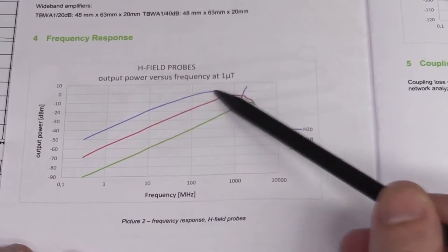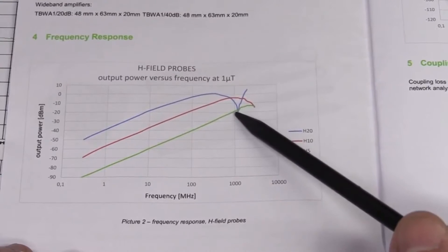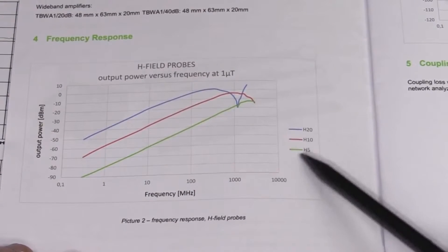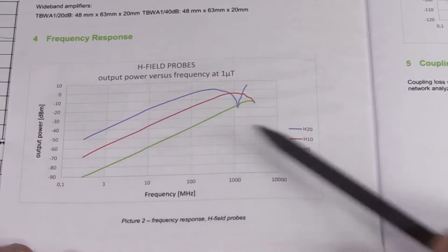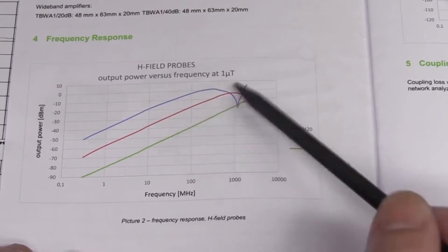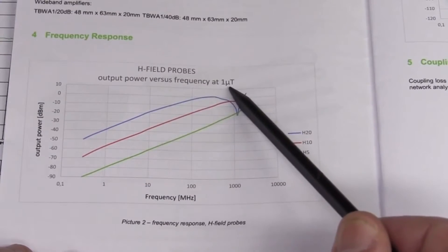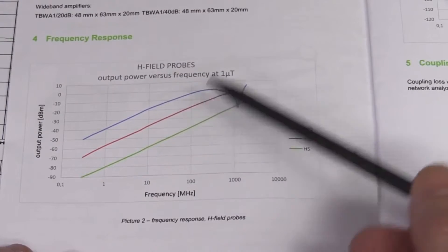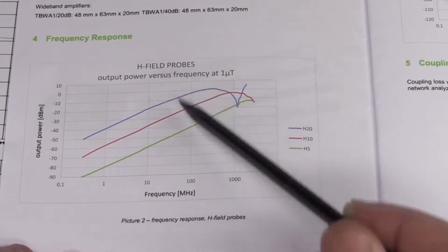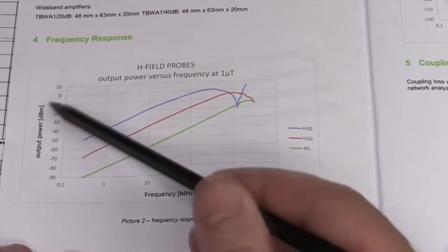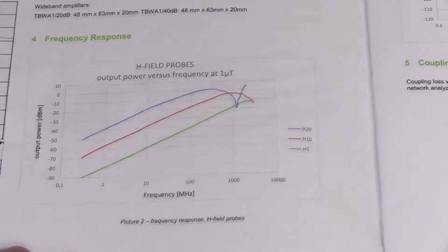This is the response for the different size ones. So there's a 20mm one that drops off at about a gig, and the various sizes, and then for a given field of one microtesla. So a known input magnetic field in Teslas will give out a certain output power dBm versus frequency.